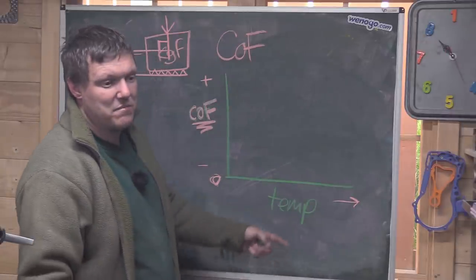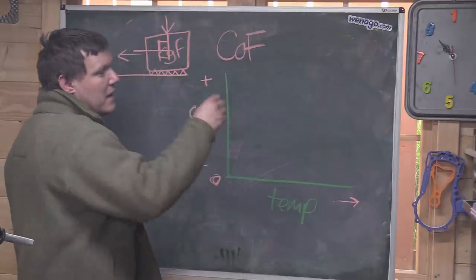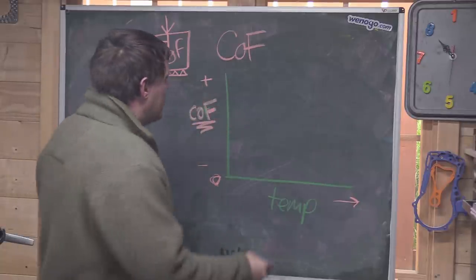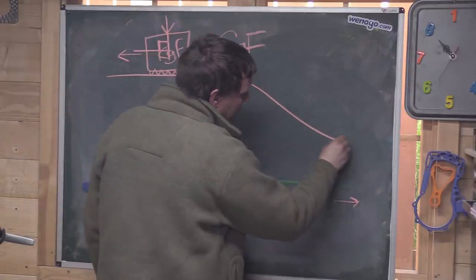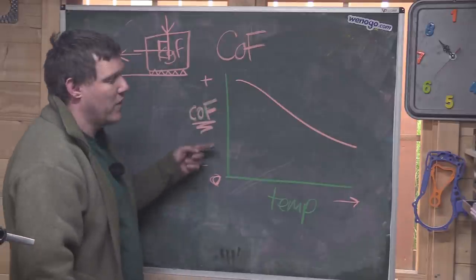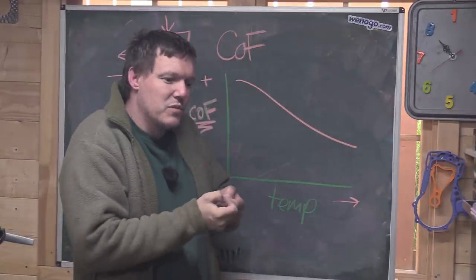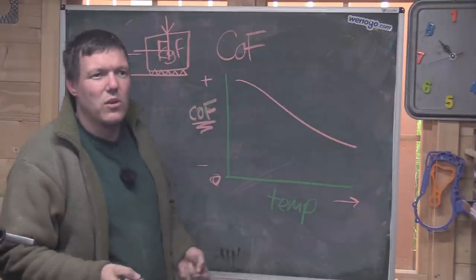Let's take something like steel. Usually what happens is that as you go hotter it falls, right? Your CoF, the ability for something to grip, falls.